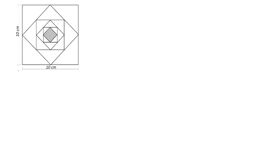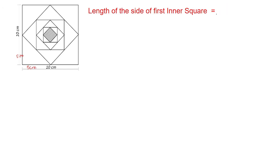Now let's solve this problem. The outermost square has a side length of 10 centimeters, so half of the side will be 5 centimeters. The length of the side of the first inner square is √(5² + 5²).